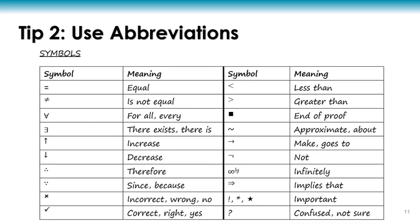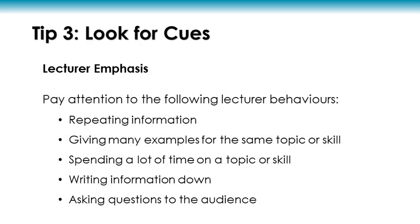Depending on the subject you're taking notes for, some abbreviations can mean different things. You can also use symbols in your notes. In terms of note-taking, a symbol is a visual representation that can replace a word or a phrase. For example, you might draw a star or write an exclamation point in front of information that is very important. Just like with abbreviations, make sure that you include a legend in your notes so you can refer back to what these symbols mean.